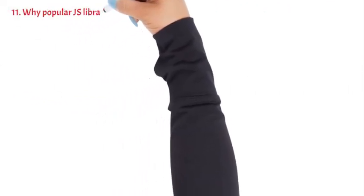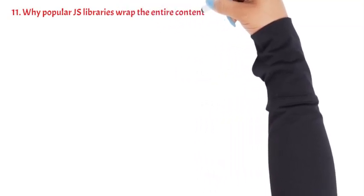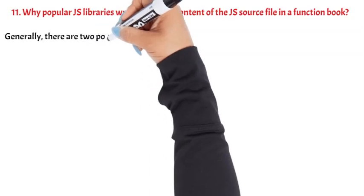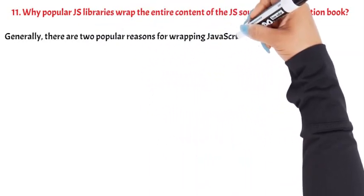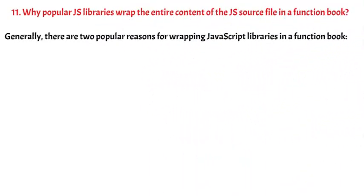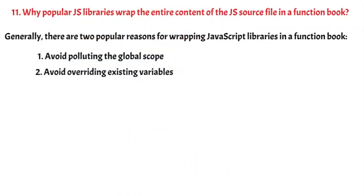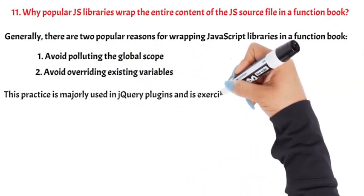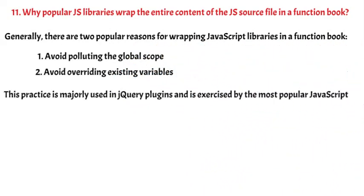Question 11: Why do popular JS libraries wrap the entire content of the JS source file in a function block? Generally, there are two popular reasons for wrapping JavaScript libraries in a function block: avoid polluting the global scope and avoid overwriting existing variables. This practice is majorly used in jQuery plugins and is exercised by the most popular JavaScript libraries.